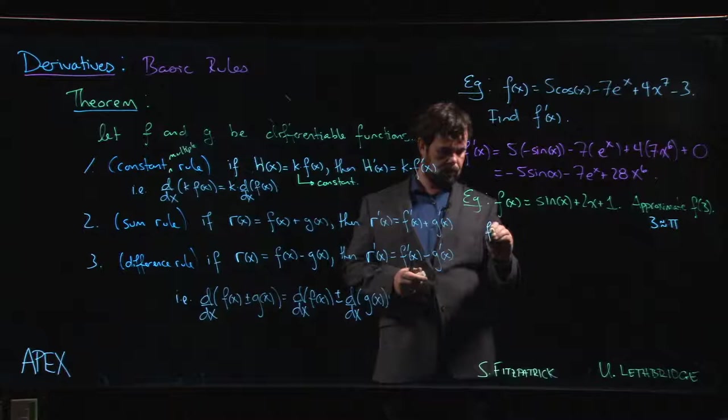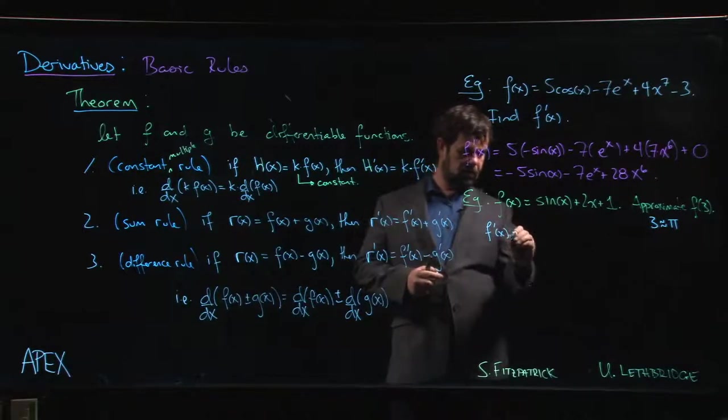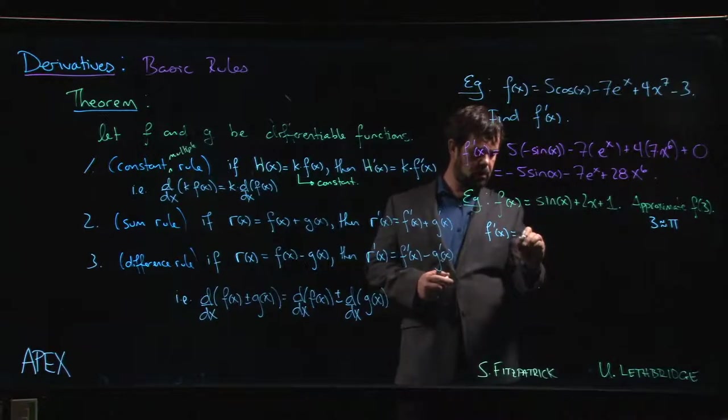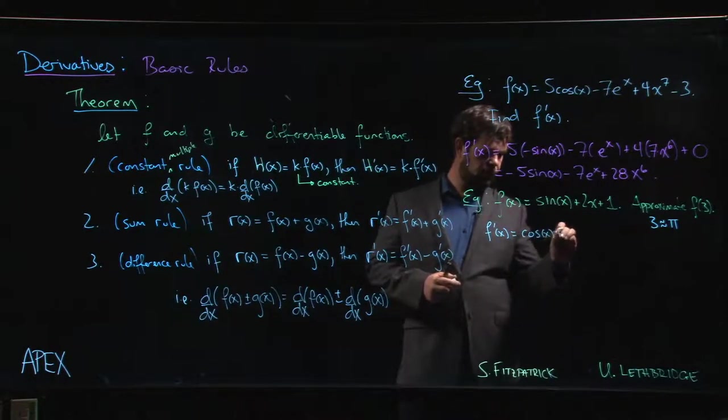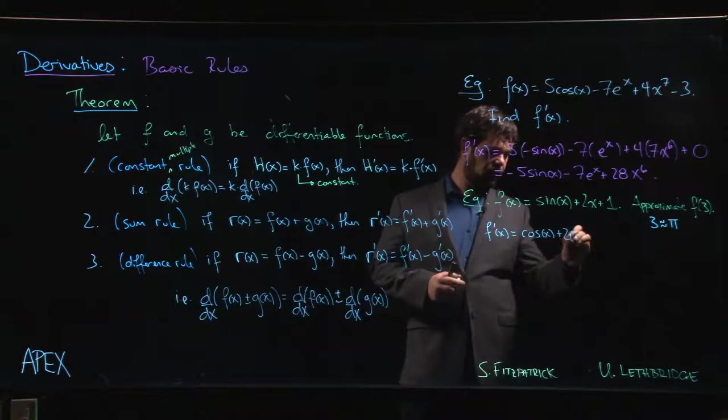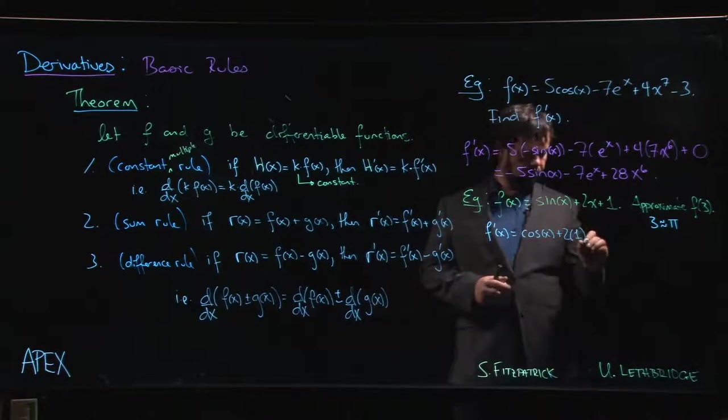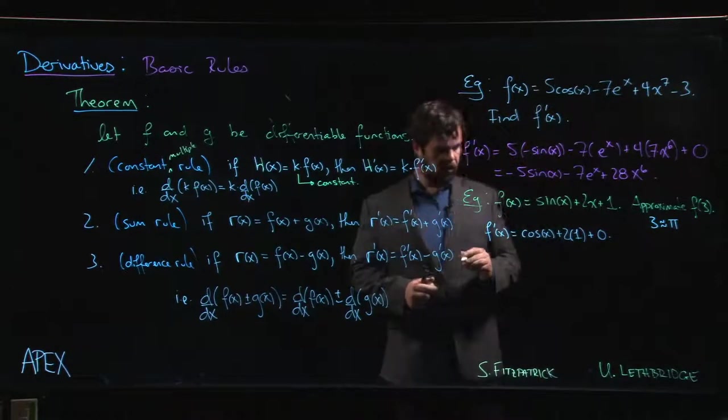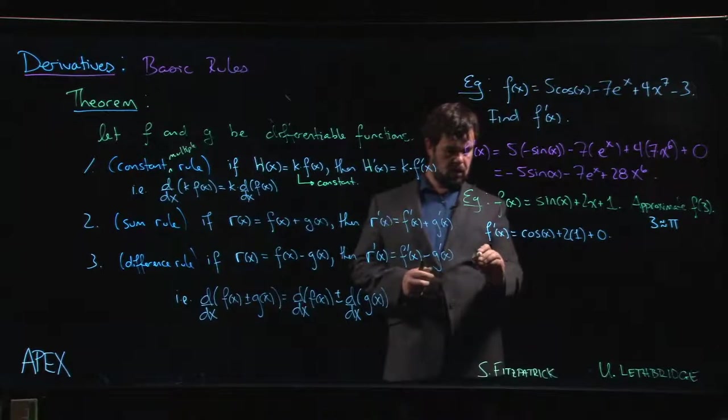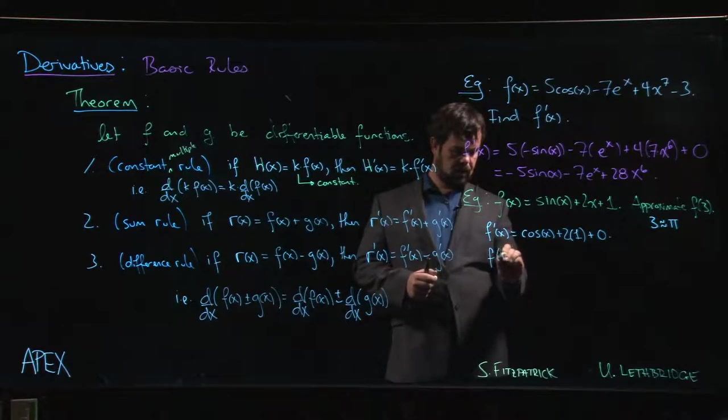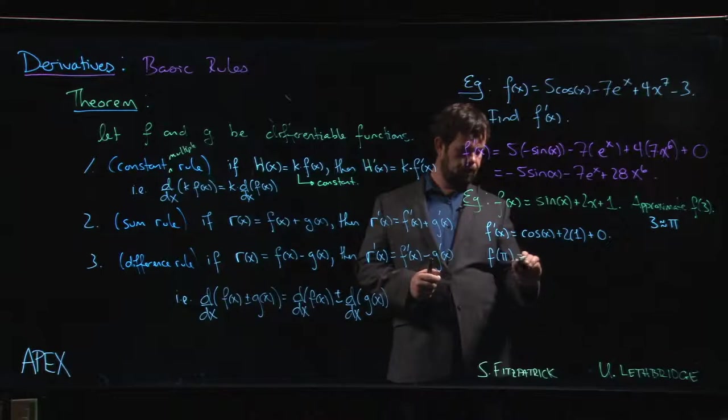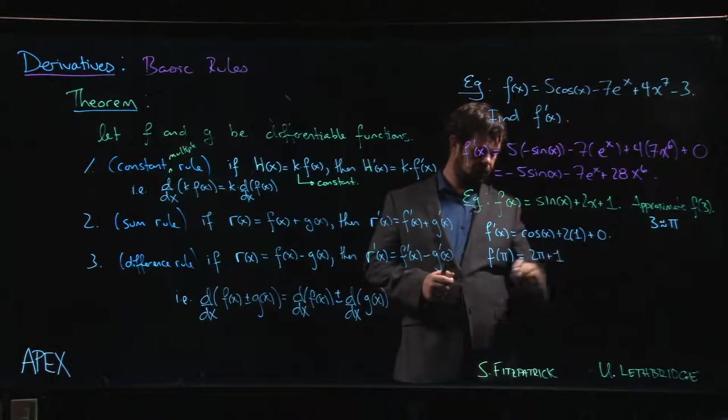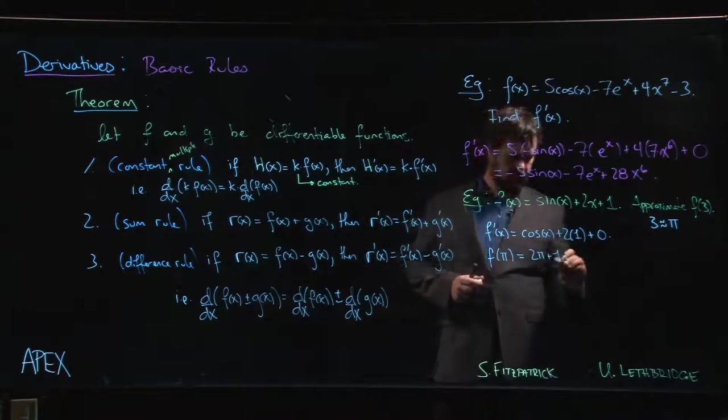So we take the derivative of sine, so we have to go term by term. Derivative of sine is cosine, plus two times the derivative of x which is one, plus zero. Okay, so now we calculate that f of pi is two pi plus one. We calculate that f prime of pi...